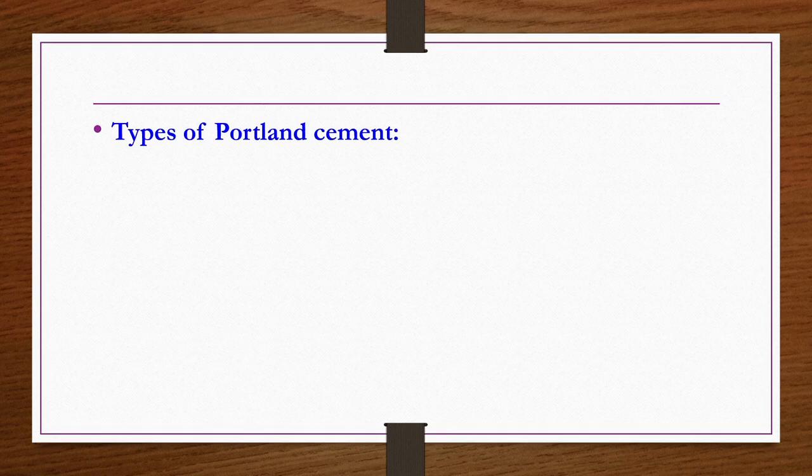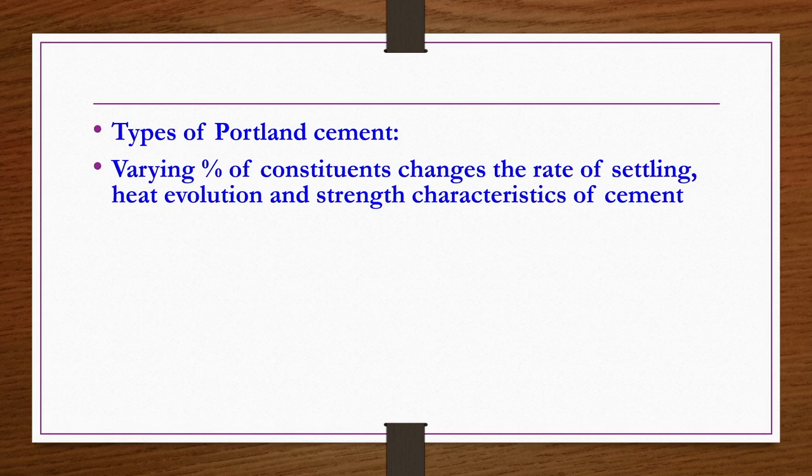There are five different types of Portland cement depending on the percentage of silicates and aluminates present. Varying percentages of constituents changes the rate of settling, heat evolution, and strength characteristics of the cement.